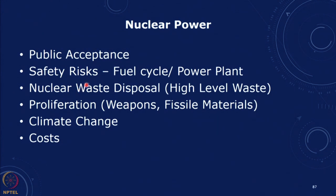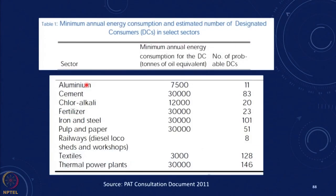Let me look at another energy efficiency example. I talked about the Perform, Achieve and Trade (PAT) scheme, which was launched by the Bureau of Energy Efficiency. The idea was that large energy intensive industries were targeted as designated consumers. There were discussions with each of these stakeholders, the total energy used was calculated, the specific energy consumption — energy consumed per unit of product — was calculated, and they were set targets in terms of how much they should reduce specific energy consumption.